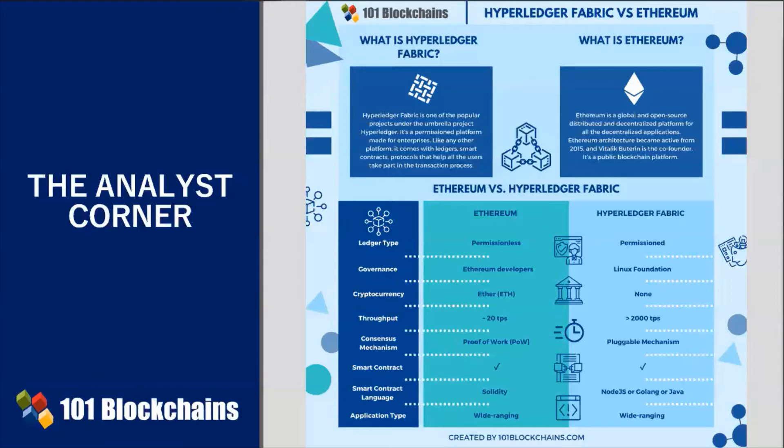Now it's time to assess Hyperledger Fabric versus Ethereum. Both platforms do a great job in their respective fields. The comparison starts with the ledger type. Hyperledger Fabric is a permissioned platform, meaning it's not for the public eye and is best suited for enterprises, as it can offer the privacy level they need through its channels architecture.